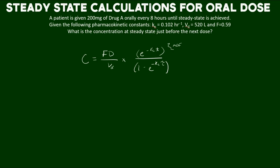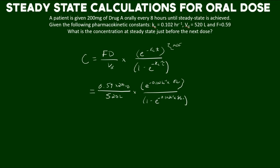Let's go ahead and plug in the values. I chose eight hours for the time because just before the next dose, we can safely assume the full interval of eight hours from dose to dose. The top and bottom exponents match since we put in eight hours for tau. If you put this into your calculator, the answer is 0.18 milligrams per liter.